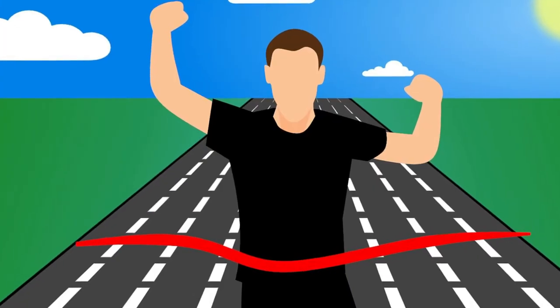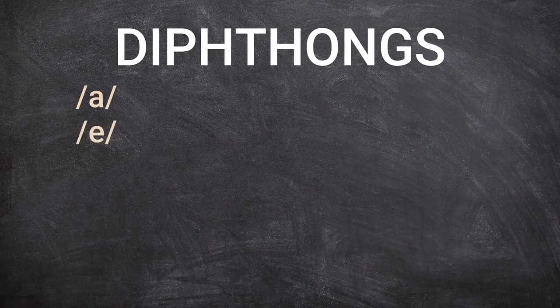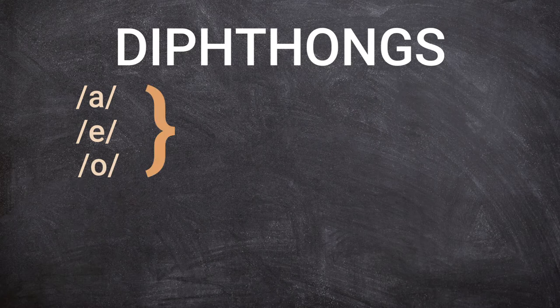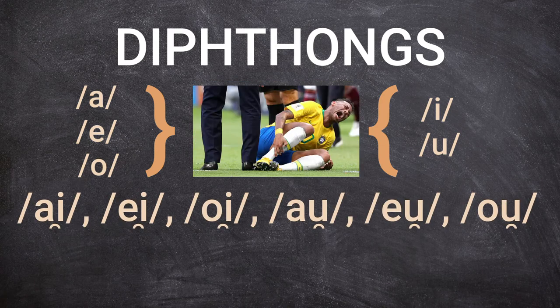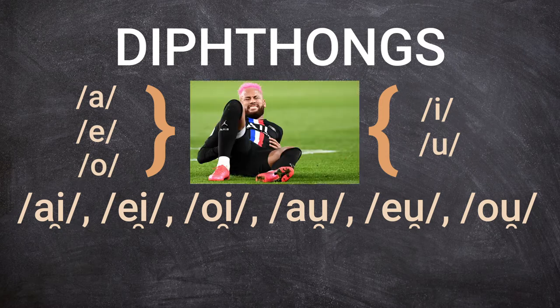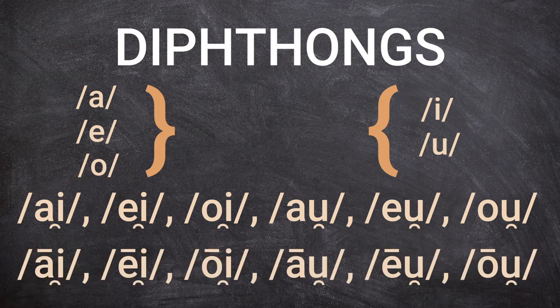To finish with the Indo-European vowel system, we had diphthongs composed of A, E, or O as a first element and I or U as a second element, giving a combination of six diphthongs. In these diphthongs, the second element was always short, while the first element could be short or long, for a total of twelve diphthongs.